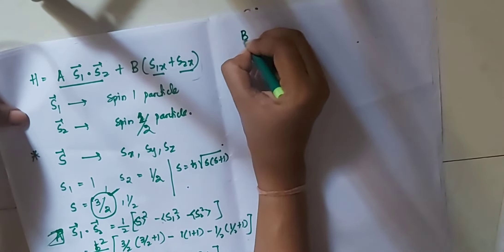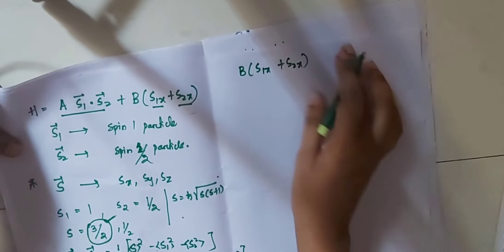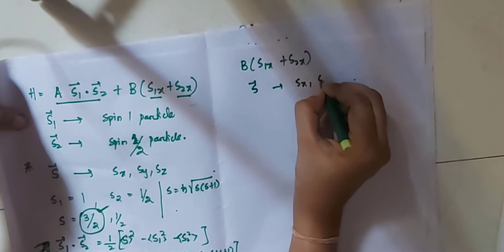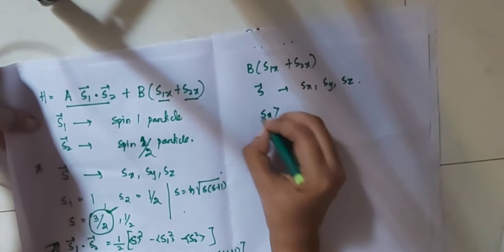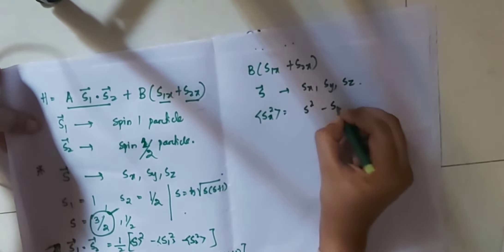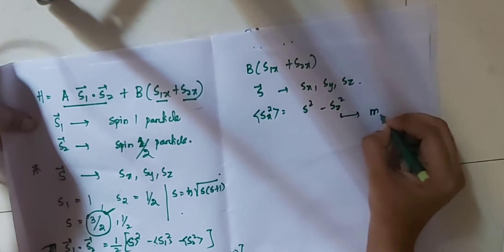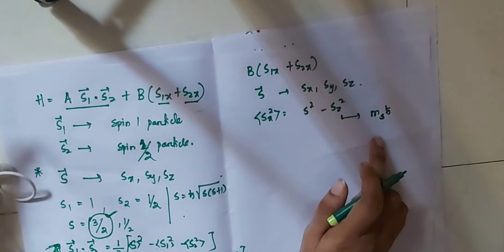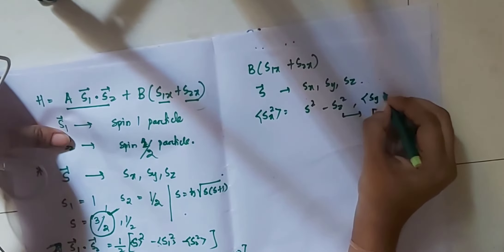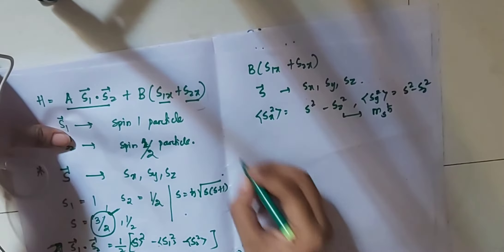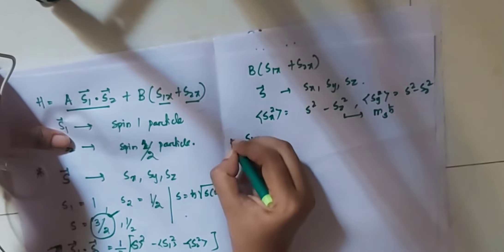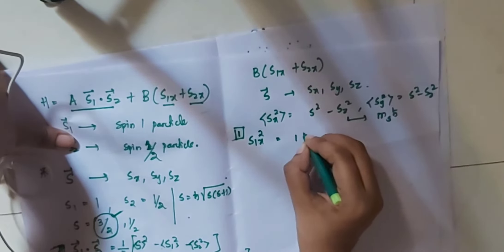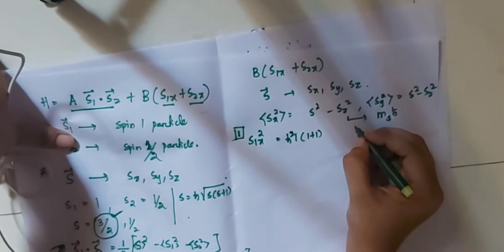For the second part, b(S1x + S2x), I need to find S1x and S2x. We know Sx² = S² - Sz², where Sz = ms·ħ. To find S1x for the spin-1 particle: S1x² = S1² - S1z², and S1² = 1(1+1)ħ² = 2ħ².